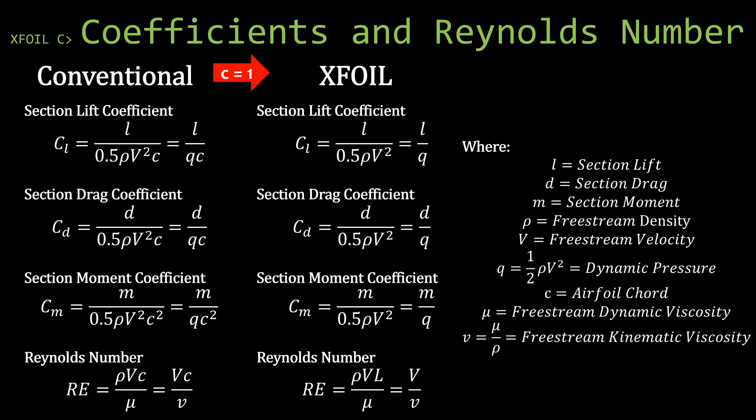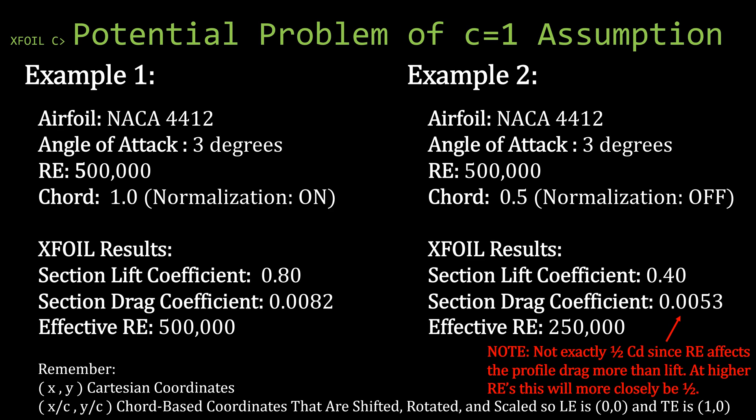On the next slide we have an example of why assuming the chord is equal to one can cause problems. On the left side of the screen, the NACA 4412 airfoil is loaded into XFOIL and normalized with a chord equal to one. We're going to look at a flow of half a million Reynolds number at an angle of attack of three degrees. On the right side, we do the exact same thing but with a chord of 0.5 — which could happen if you left the normalization flag off when importing, or scaled the airfoil in the GDES menu.